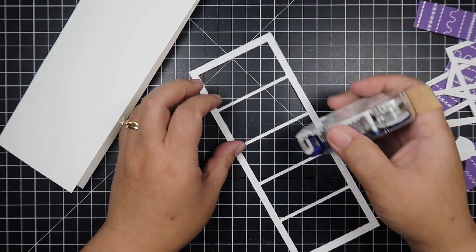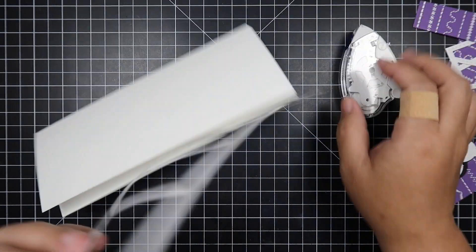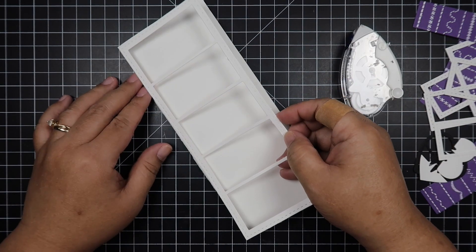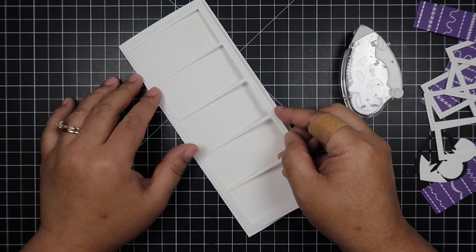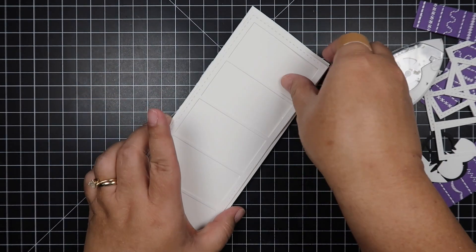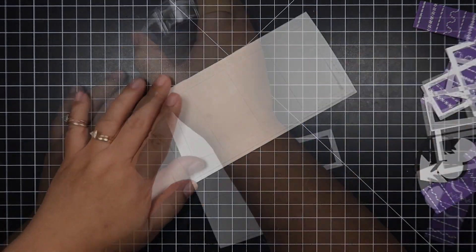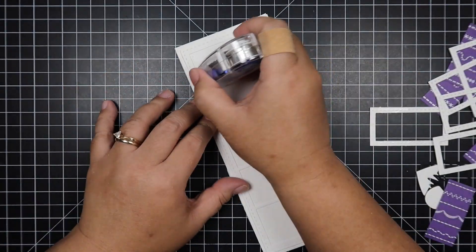Now I'm going to put my adhesive on the back of my frame. This is going to be a tone-on-tone look, which I really love because the purple is going to pop out and the white embossed borders that we heat embossed earlier are really going to stand out.